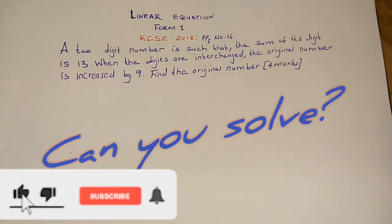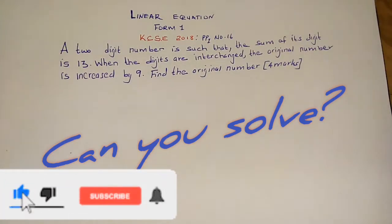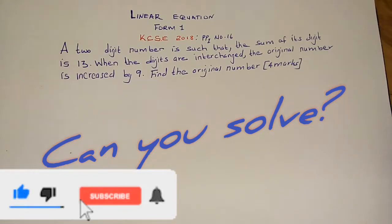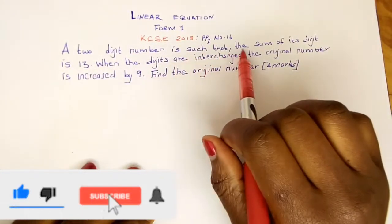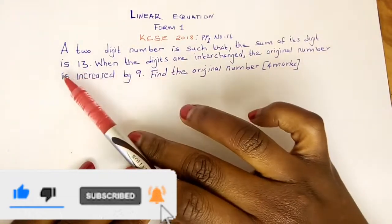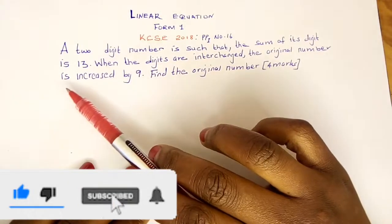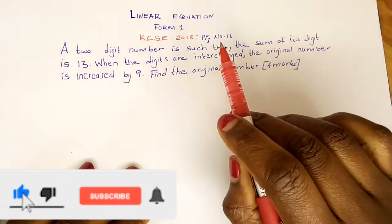We have a question that we are going to deal with in this tutorial about linear equation formula. This question was tested during the KCSC of year 2018, Paper 1, number 16. The question goes like this: a two-digit number is such that the sum of its digits is 13.